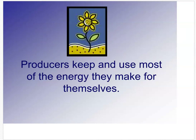Producers keep and use most of the energy they make for themselves. It's actually a 90% formula — plants use 90% of the energy they take from the Sun, water, and carbon dioxide for their own growth. Only 10% of that energy gets released into the air as waste.